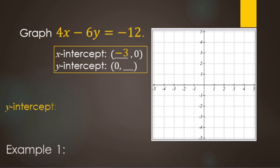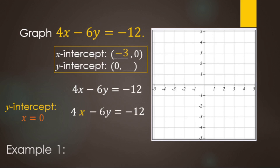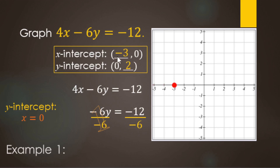For the Y-intercept, on the Y-axis X equals 0. Rewrite the equation replacing X with 0: 4 times 0 is 0, so we have negative 6Y equals negative 12. Divide both sides by negative 6: negative over negative is positive, 12 divided by 6 makes 2. So the Y-intercept is 2. Now we graph: X-intercept at negative 3, Y-intercept at 2. Plot both points, draw the line through them, and you're done.